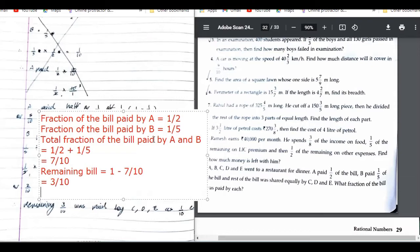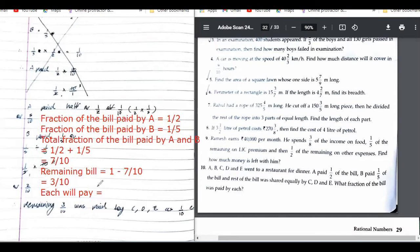Now, luckily, there are only 3 people. So each will pay equally. So let me just do it. So that means that will be 3 upon 10 divided by 3. Is this thing clear? Yes.